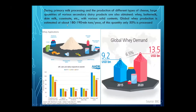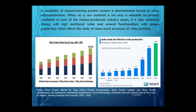During primary milk processing and the production of different types of cheese, large quantities of various secondary dairy products are obtained: whey, buttermilk, thin milk, casein, etc. Global whey production is estimated at many million tons per year, and only 50% is processed. A possibility of nanostructuring protein systems is demonstrated based on whey electroactivation. Whey as a raw material is not only available as a by-product in most cheese production industry areas, but is also relatively cheap with high nutritional value and unique functional properties.